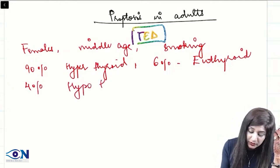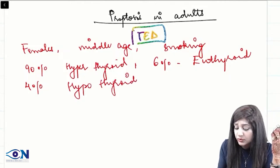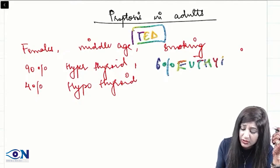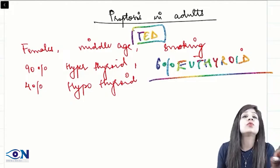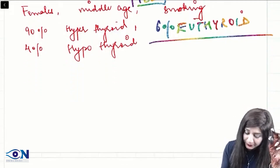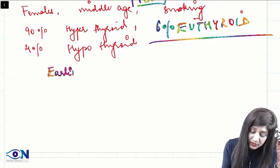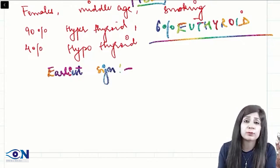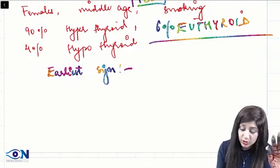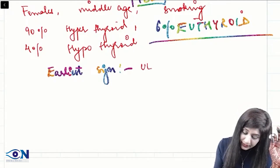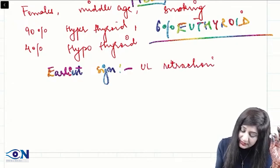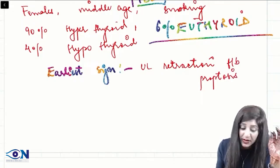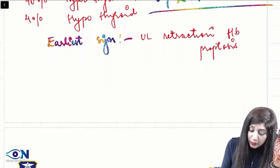Six percent of people with thyroid eye disease will be euthyroid, and four percent will be hypothyroid. So just because the patient has euthyroid status, you cannot rule out thyroid eye disease. Regarding the earliest sign: there is confusion that it is proptosis, but the earliest sign is actually upper lid retraction. Proptosis is the most common sign but not the earliest.